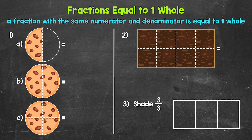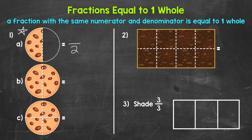Starting with number one, where we have three big cookies. We're going to write a fraction for each cookie representing the amount left. Starting with cookie A: this cookie has been divided into a total of two equal parts, so two is our denominator. One of those parts is left, so one is our numerator — one half. One half of the cookie is left, so that is less than one whole.